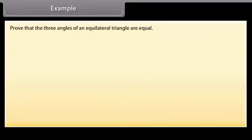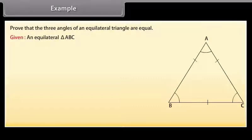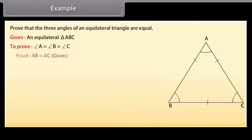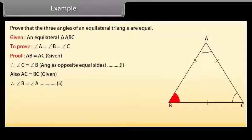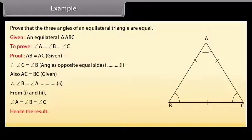Example: Prove that the three angles of an equilateral triangle are equal. Given an equilateral triangle ABC, we have to prove that angle A is equal to angle B which equals angle C. Proof: AB is equal to AC (given), therefore angle C is equal to angle B because angles opposite equal sides are equal — mark it as (1). Also, AC is equal to BC (given), therefore angle B is equal to angle A — mark it as (2). From (1) and (2), angle A is equal to angle B is equal to angle C. Hence, the result.